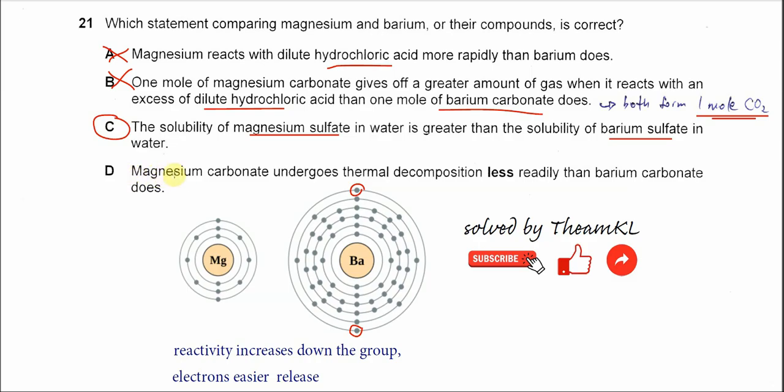D. Why is D not the answer? Magnesium carbonate undergoes thermal decomposition less readily than barium. So magnesium carbonate is the one that's easiest to decompose compared to calcium, strontium, and barium carbonate. Because magnesium is small, it has more polarizing power, so it's more readily decomposed, not less readily. So this one is wrong.